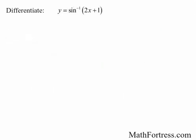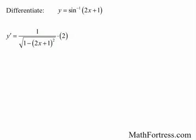Differentiate the expression y equals sine inverse of 2x plus 1. Here we need to apply the chain rule, with the outer function equal to sine inverse of x and the inner function equal to 2x plus 1. Applying the chain rule, we have 1 over the square root of 1 minus (2x plus 1) squared, times 2. Simplifying algebraically and expanding the binomial in the denominator, we have the following.